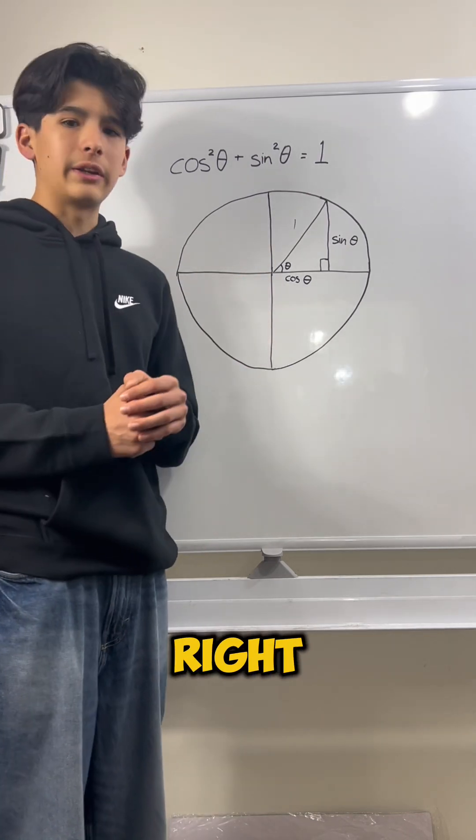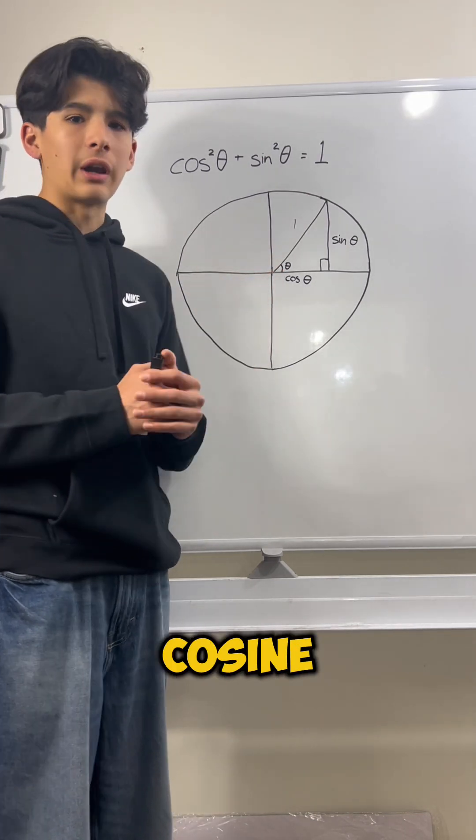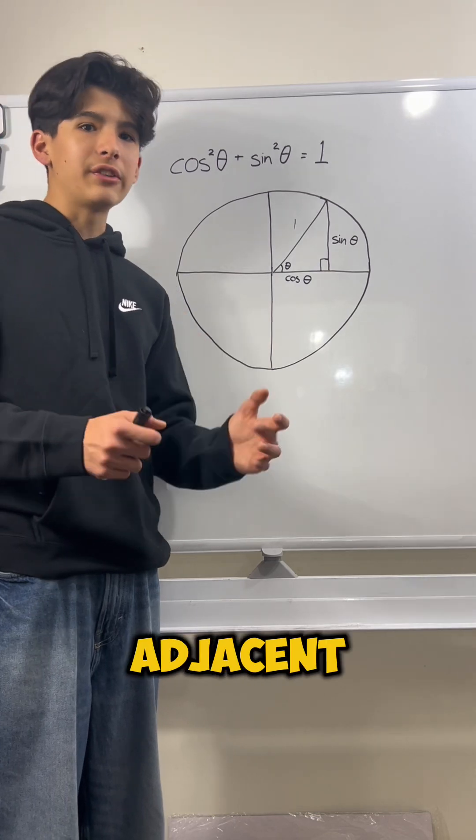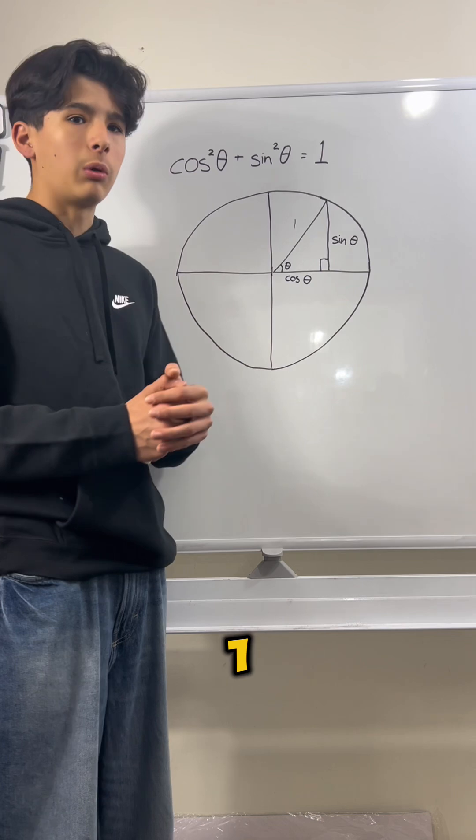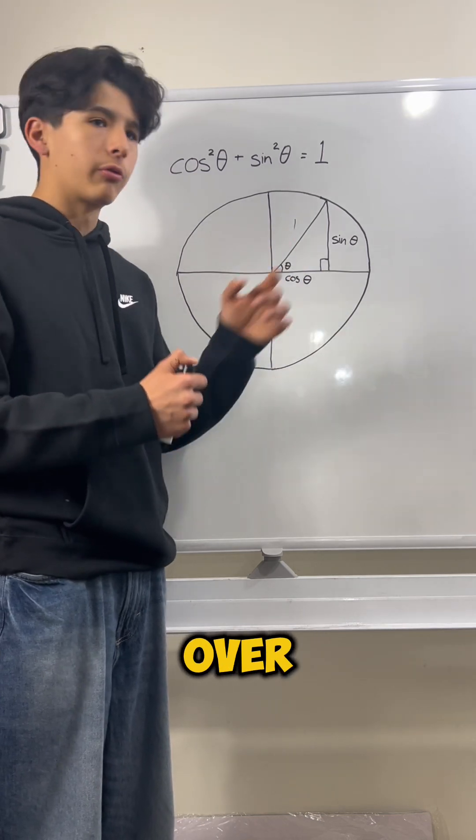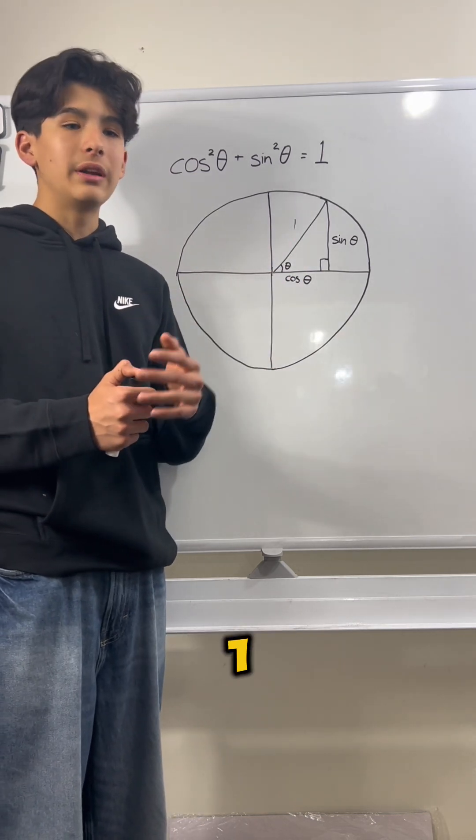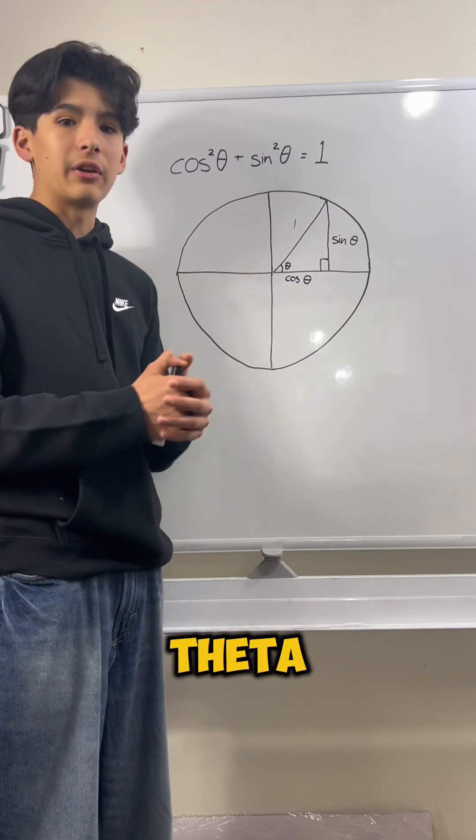Let's look at this angle right here, theta. What would the cosine of this angle be? It'll be adjacent over hypotenuse. The adjacent is this side, and the hypotenuse is 1. That means we have this side over 1, and anything over 1 is just itself. So this would be cosine of theta.